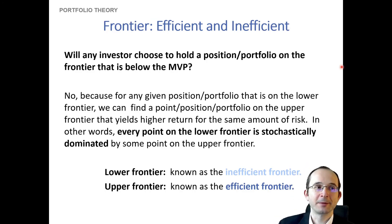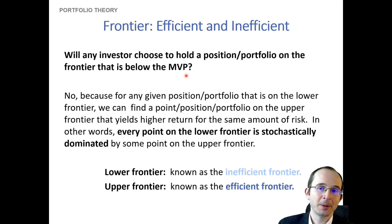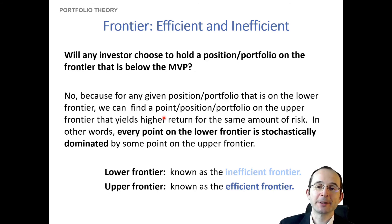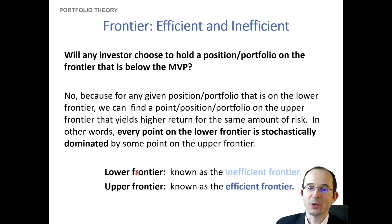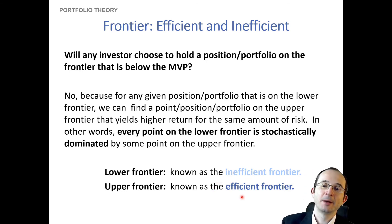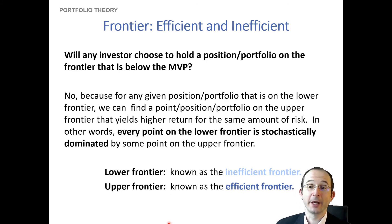Nobody will want to be on the inefficient frontier — any point below the minimum variance portfolio — simply because they can do better by going to its counterpart above the minimum variance portfolio, picking the same level of risk but the higher expected return side of the frontier. Anything below the minimum variance portfolio is the inefficient frontier; everything above it is the efficient frontier — the investment opportunity set when all we have are risky assets — and this concept generalizes to more than just two risky assets.